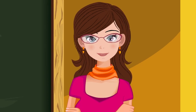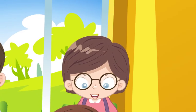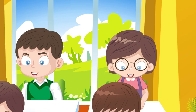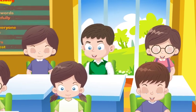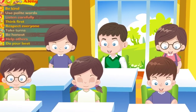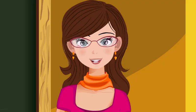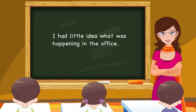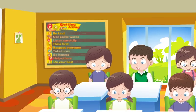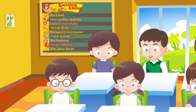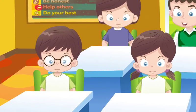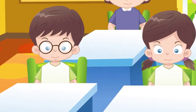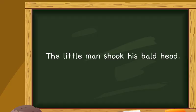Quantifiers. 'Little' is used before uncountable nouns and means very less or negligible. 'A little' is used before uncountable nouns and means a less amount. 'The little' is also used before uncountable nouns and means all that is very less. Example: 'The little man shook his bald head.'